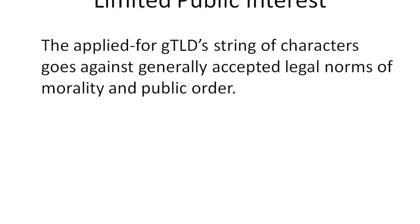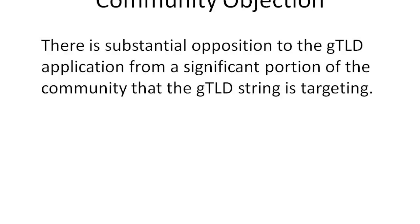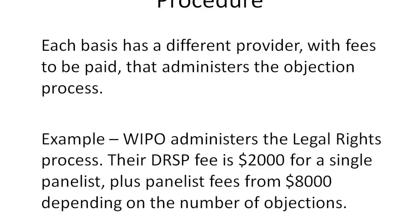The fourth basis is community objection. This would be for those that are community applications — an objection saying either that these people don't represent the community, or that this is a particular community that does not need to be represented by a domain.